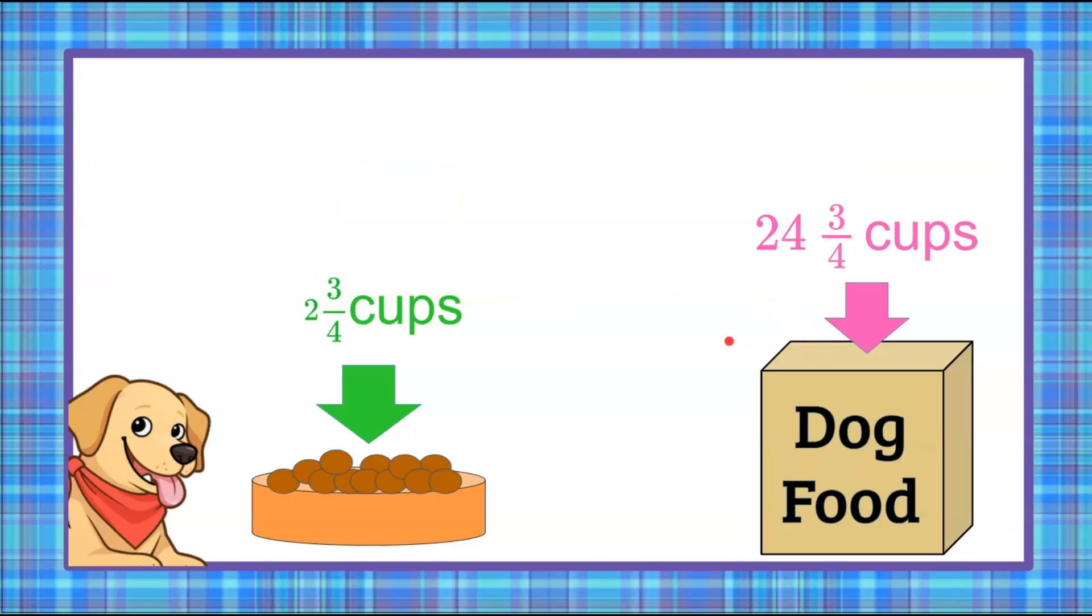Now let's look at another way to solve this. We're going to do a numerical equation. We're going to start with 24 and 3/4 cups of dog food in our bag. We want to divide that by portions of 2 and 3/4 cups and determine how many 2 and 3/4 cups are there in this whole bag.